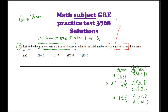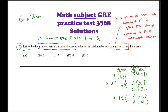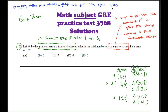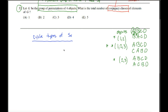Conjugacy classes are a way to partition the elements of a group into classes according to their fundamental behavior. It turns out that the conjugacy classes of any symmetric group, in particular S4, are just the different cycle types. We've already seen two: the type where we permute two objects, like (1 2) or (2 3), and the type where we cycle three objects.